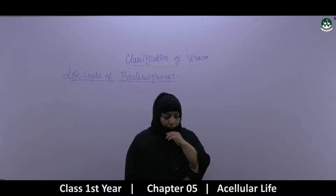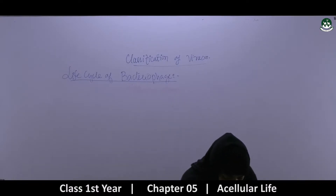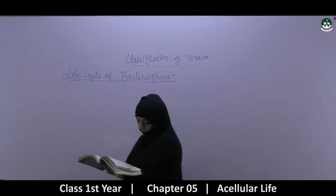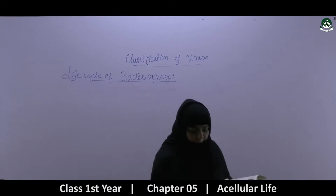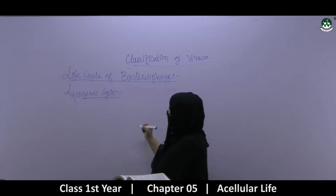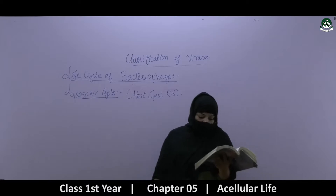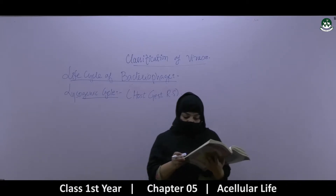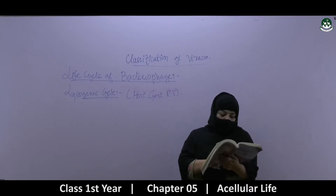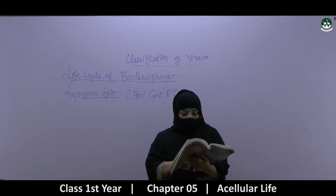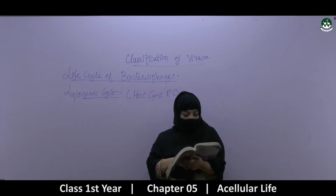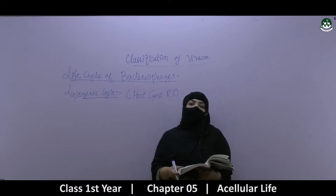Students, today we are again here for a new topic. Last time we were discussing the life cycle of the bacteriophage, in which we did the lytic cycle, and today we will start with the lysogenic cycle. The lysogenic cycle is a kind of cycle which is a host-guest relationship. All bacteriophages do not cause lysis of bacterium. In the lysogenic cycle, the phage does not destroy the host cell; in fact, both phage and host cell live together in peaceful co-existence. Therefore, such a relationship is called a host-guest relationship, and the phage is called temperate.